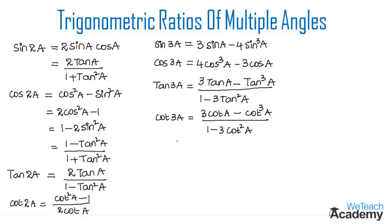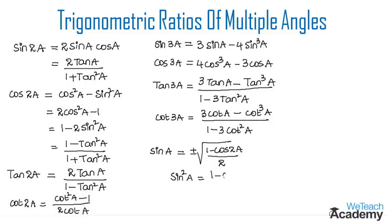Now let us discuss formulas for the angle A. Sin A is equal to plus or minus under root of (1 minus cos 2A) divided by 2, where 2A represents the multiple angle. From this formula, sin square A is equal to (1 minus cos 2A) divided by 2, which also means 1 minus cos 2A equals 2 sin square A.